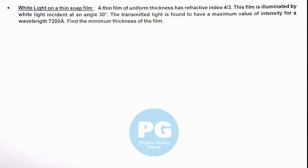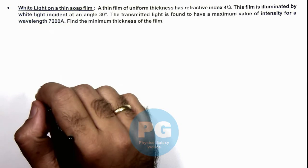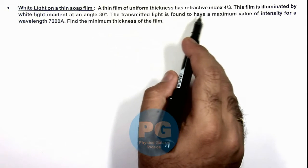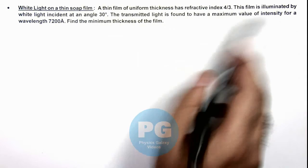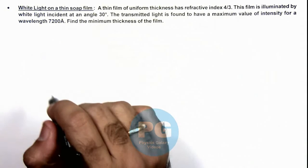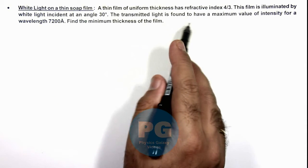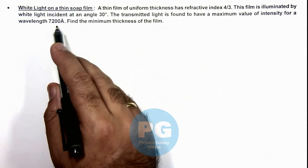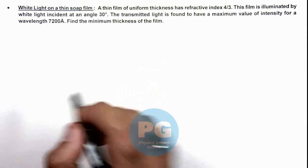In this illustration, we'll analyze white light on a thin soap film. We are given that a thin film of uniform thickness has refractive index 4/3, and this film is illuminated by white light incident at an angle 30 degrees. The transmitted light is found to have a maximum value of intensity for a wavelength 7200 angstrom, and here we are required to find the minimum thickness of the film.